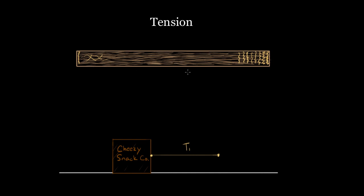Tension is useful because ropes allow us to transmit a force over a large distance. A typical problem might say: there's a force of tension on this box and it causes the box to accelerate with some acceleration a-zero. The question might ask how much tension is required in order to accelerate this box of mass m with acceleration a-zero.